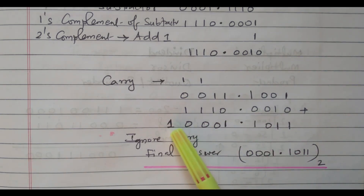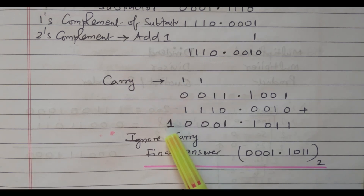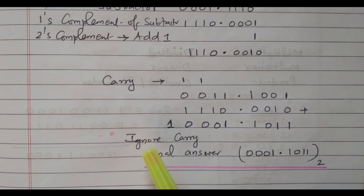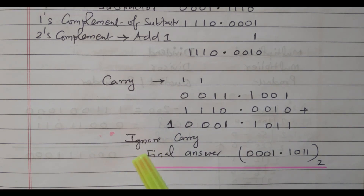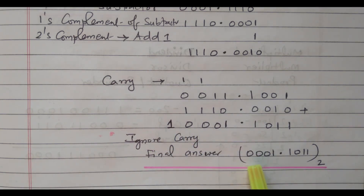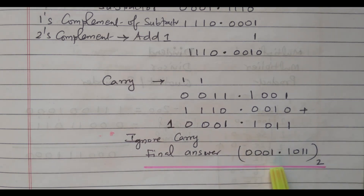Now the carry is generated. In the previous problem carry was not generated, so that answer was negative. Now carry is generated, meaning the answer is positive and in true form — we can neglect this carry. So the final answer is 0010.0011.